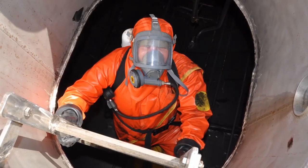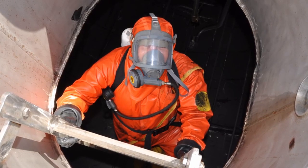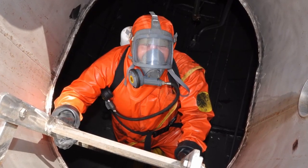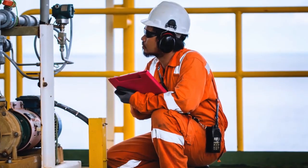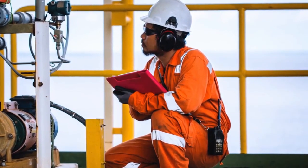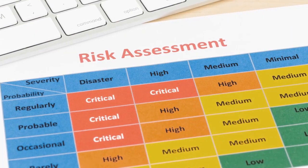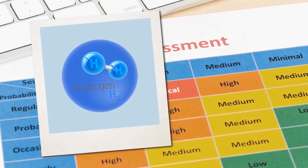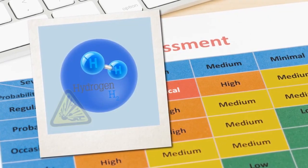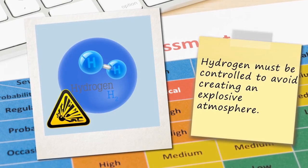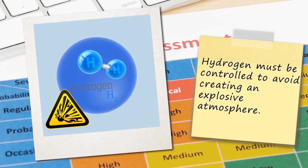Active substances used to kill unwanted organisms may also be harmful to the crew and the environment. The risks in storing and using the substances must be assessed with respect to the crew and environment, and always in accordance with the manufacturer's instructions. A byproduct of electrolysis is hydrogen, which is explosive when mixed with air. The hydrogen must be controlled to avoid creating an explosive atmosphere.